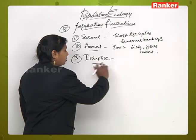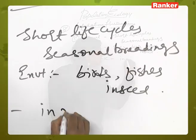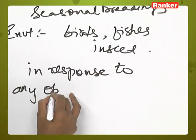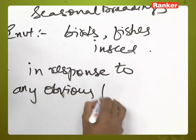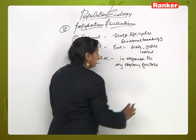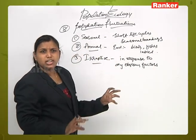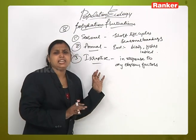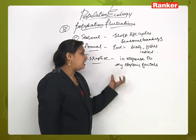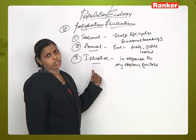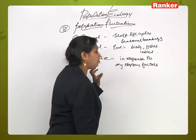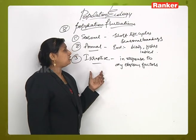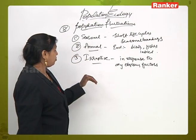Eruptive fluctuations are those fluctuations which are not occurring either seasonally or annually, and they are not occurring at regular intervals or in response to any obvious factors — those are called eruptive fluctuations. These are changes due to changes in the physical environment, physical interactions with the populations, or both. This is about population fluctuations.